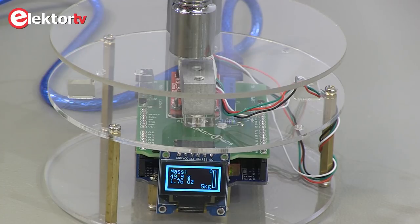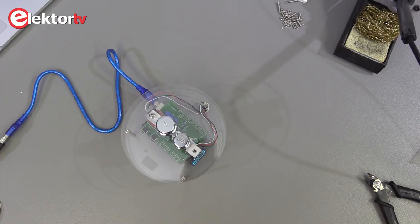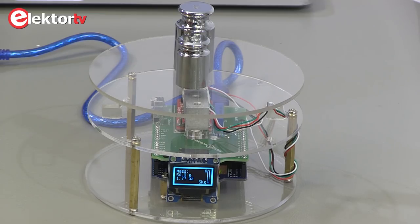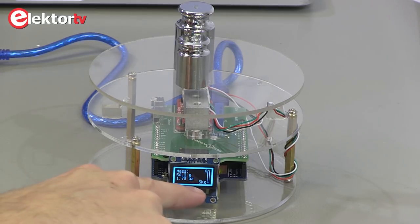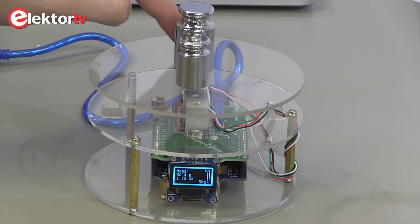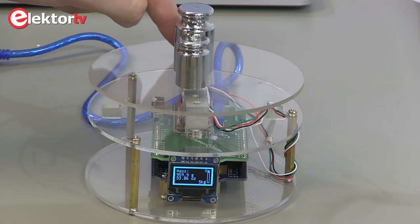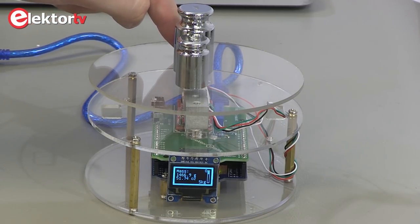This is useful when, for example, you need a small container or whatever. The scale can take a maximum load of 5 kilograms. At the right we have a small stress bar. So when I push, you can see it move.